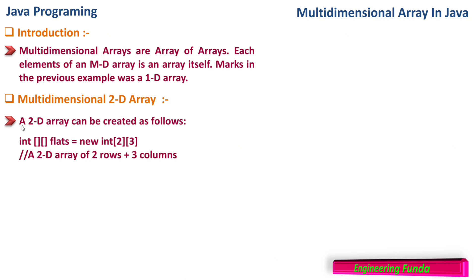A 2D array can be created as follows: integer, then two square brackets. For single dimensional array we write one square bracket; for multi-dimensional we require multiple brackets. For a 2D array we require two brackets. The name given is 'flats', which is equal to new integer with size two by three — two rows and three columns in each row. Each row is a single dimensional array of length three, and we have two such arrays.